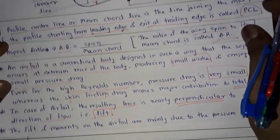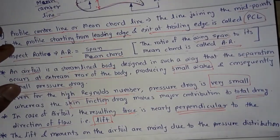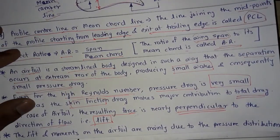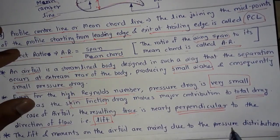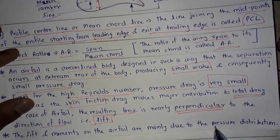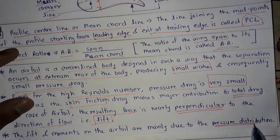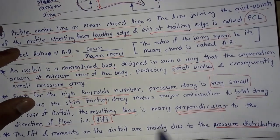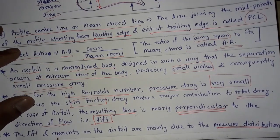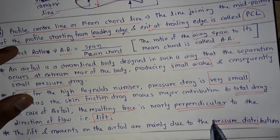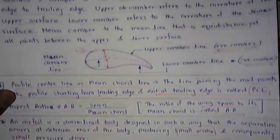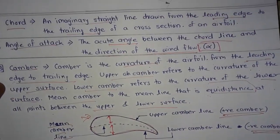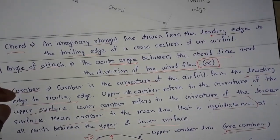The lift and moments on an airfoil are mainly due to pressure distribution. Lift and moments on the airfoil occur due to the pressure caused by the wind flow on the airfoil.